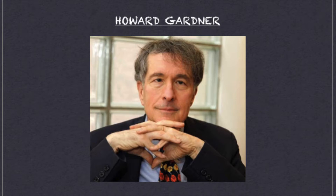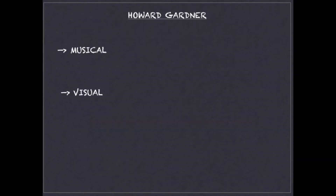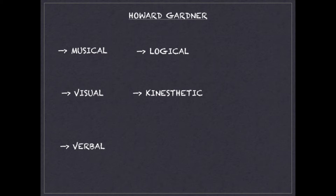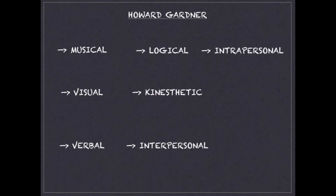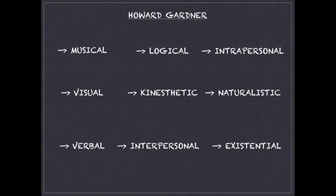All theorists before Gardner said that intelligence is one but abilities are multiple. Gardner puts forth the theory of multiple intelligences, which includes musical, visual, verbal, logical, kinesthetic, interpersonal, intrapersonal, naturalistic, and existential intelligence — thus introducing concepts like kinesthetic and musical intelligence that had never been considered before.